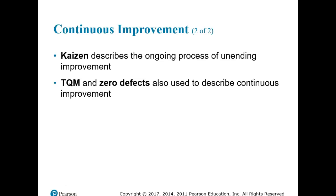The Japanese use the word kaizen to describe this ongoing process of unending improvement — the setting and achieving of ever-higher goals. In the U.S., TQM and zero defects are also used to describe continuous improvement efforts. Whether it's PDCA, kaizen, TQM, or zero defects, the operations manager is a key player in building a work culture that endorses continuous improvement.